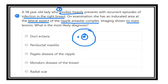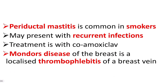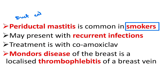Periductal mastitis is most common in smokers. Duct ectasia and periductal mastitis are both common in smokers and may present with recurrent infection. Periductal mastitis typically presents with recurrent mastitis and recurrent infection. Duct ectasia also presents with recurrent infection, and treatment is usually with co-amoxiclav.